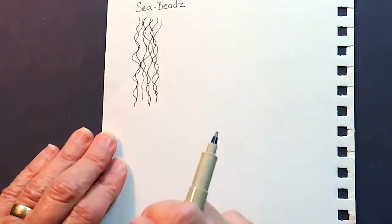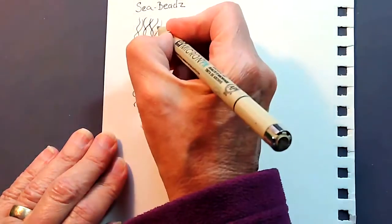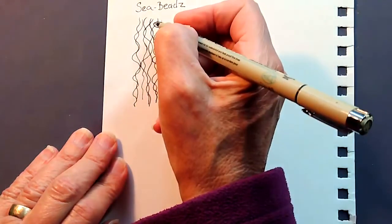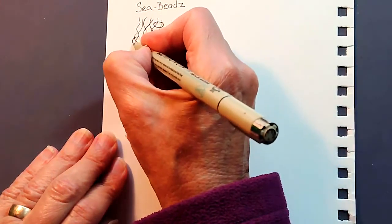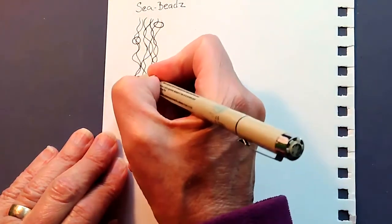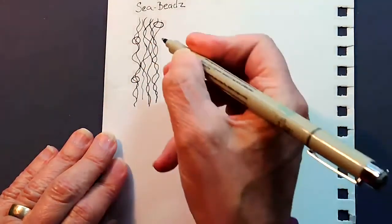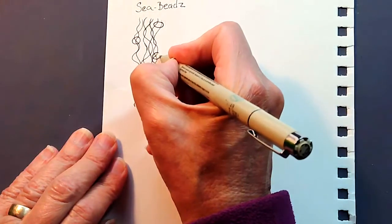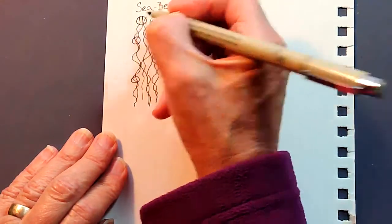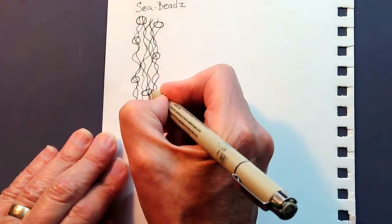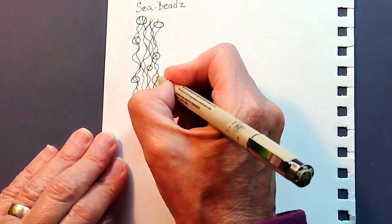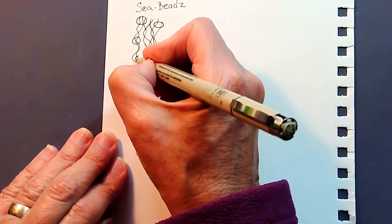So once you have the basic lines down, then you start by corralling them together here and there with circular forms. Some sort of orb shape. It can be oval, it can be quite round. It's up to you. I'm just doing these at random. I'm not thinking about where I want to place them so much as just being random in their placement. And they can be large and small, they don't have to be all the same size.